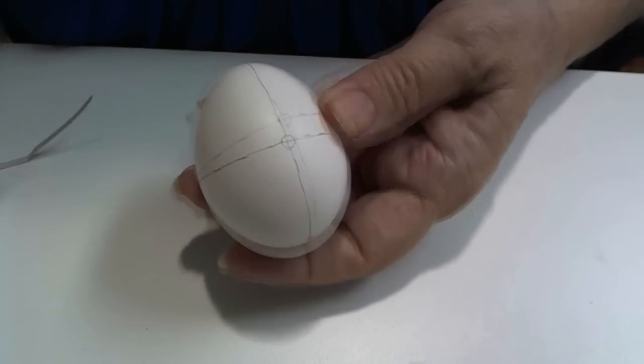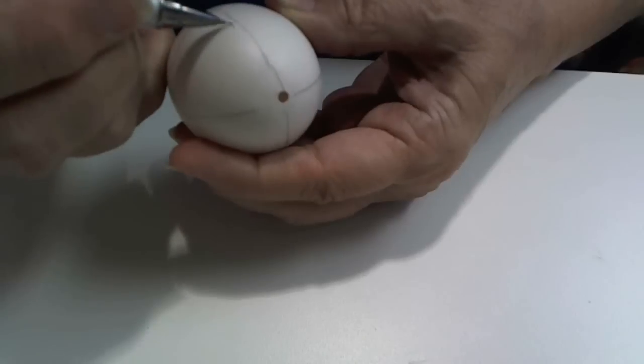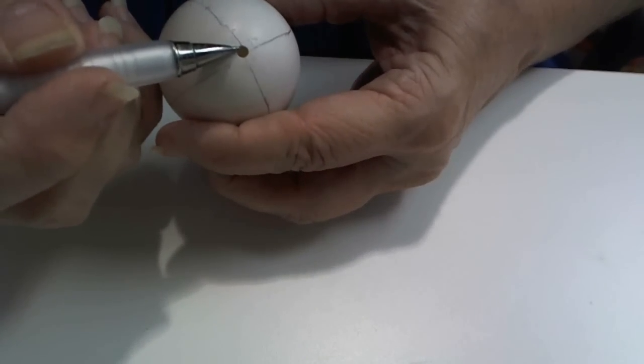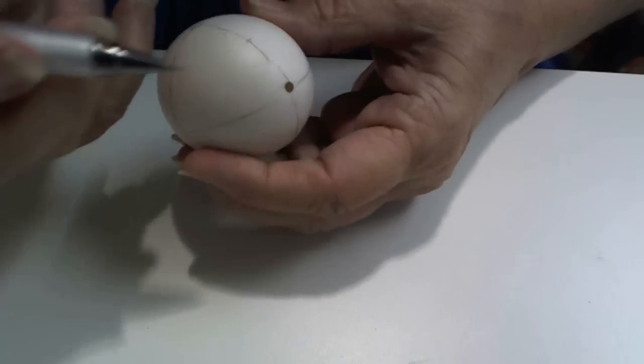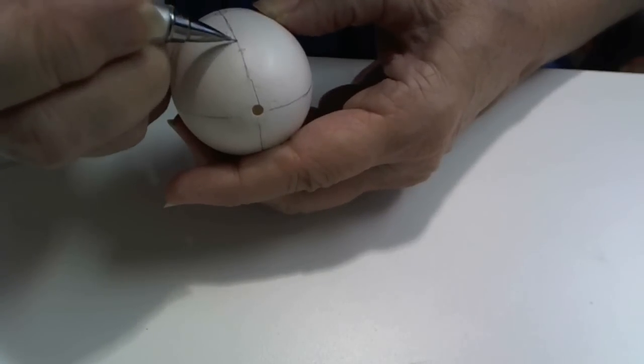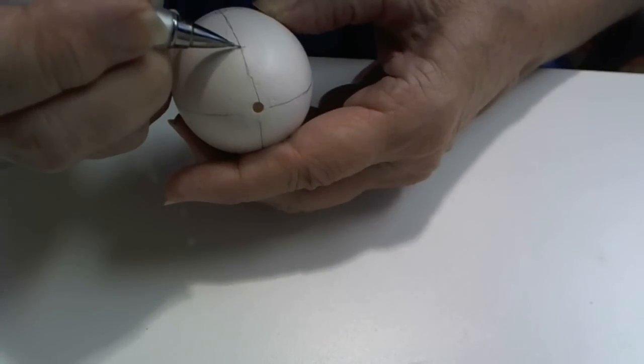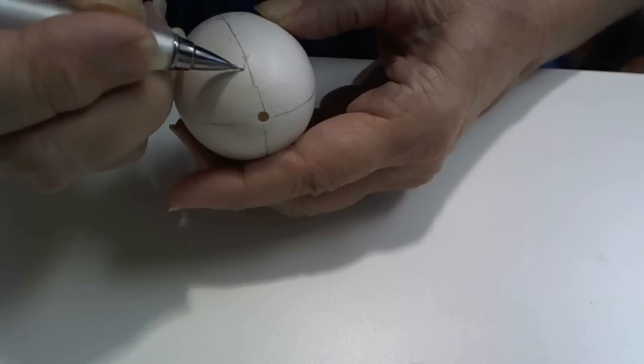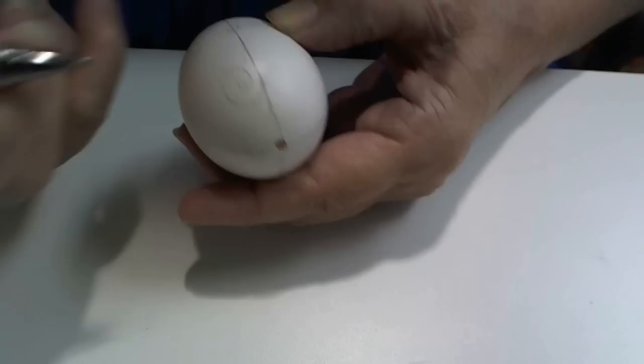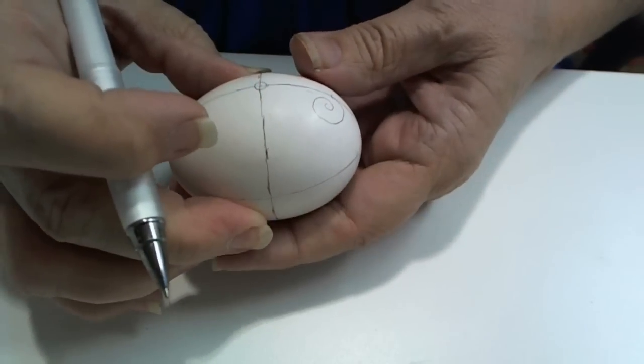To continue, I will now eyeball the distance from the crisscross and my circle. Take this line and at the halfway mark, I'm going to make a curly cue. I'm going to do the same thing on this side. I'm going to figure out the distance from this crisscross and the circle.